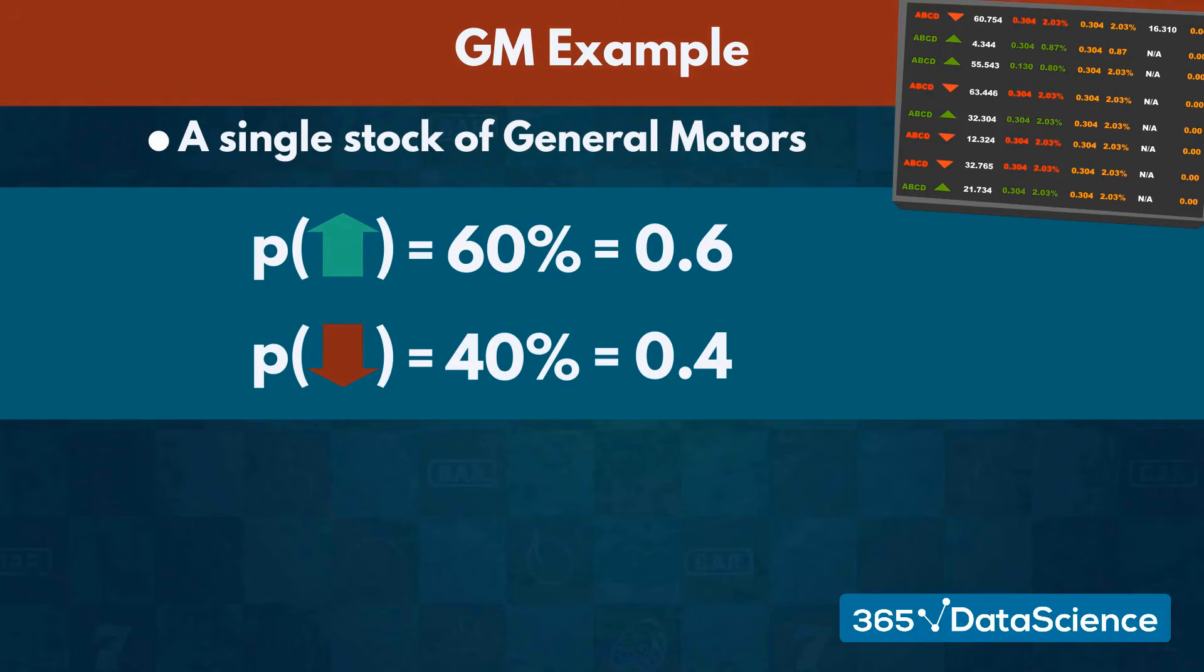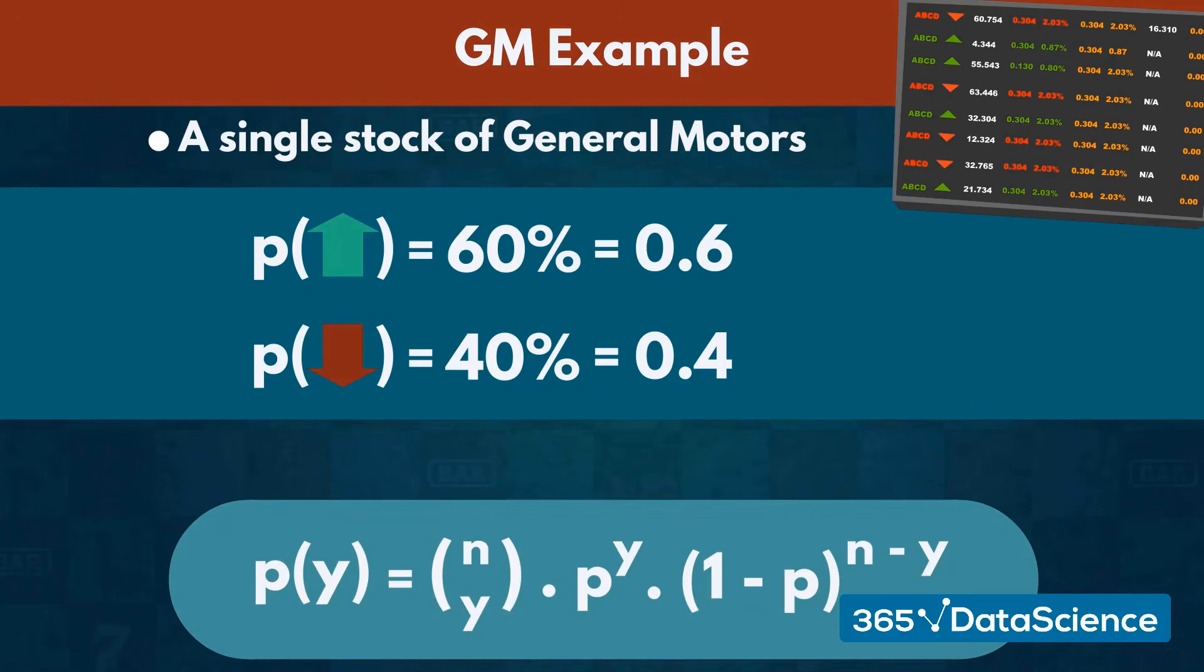By the price going up, we mean that the closing price is higher than the opening price. With the probability distribution function, you can calculate the likelihood of the stock price increasing 3 times during the 5 workday week.